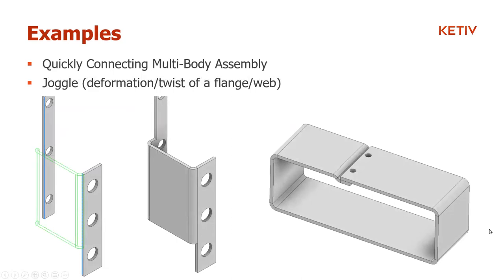We're going to go over four examples today. The first one is connecting multi-body assemblies. Some customers are tasked with creating sheet metal parts that connect the multi-body assemblies received from other parts of their team. The second example is creating joggles — a deformation in the sheet metal. This is where you have two sheet metal pieces on the same plane and you want one to go under the other, so you can do a spot weld or connect them via bolts and nuts.